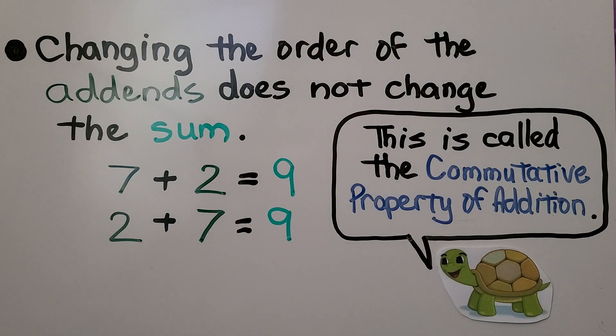Changing the order of the addends does not change the sum. 7 plus 2 is equal to 9, and 2 plus 7 is equal to 9. This is called the commutative property of addition. We're going to learn more about that later on, and you'll learn it in 3rd grade.